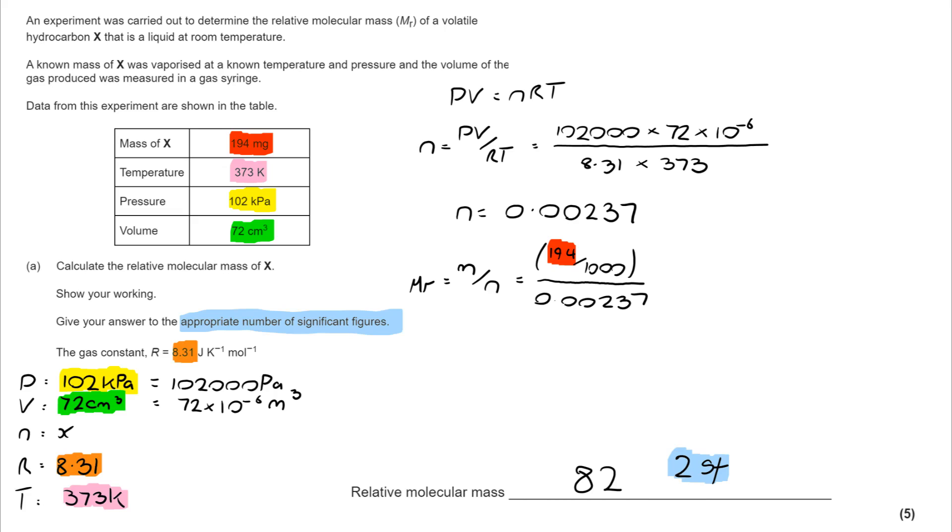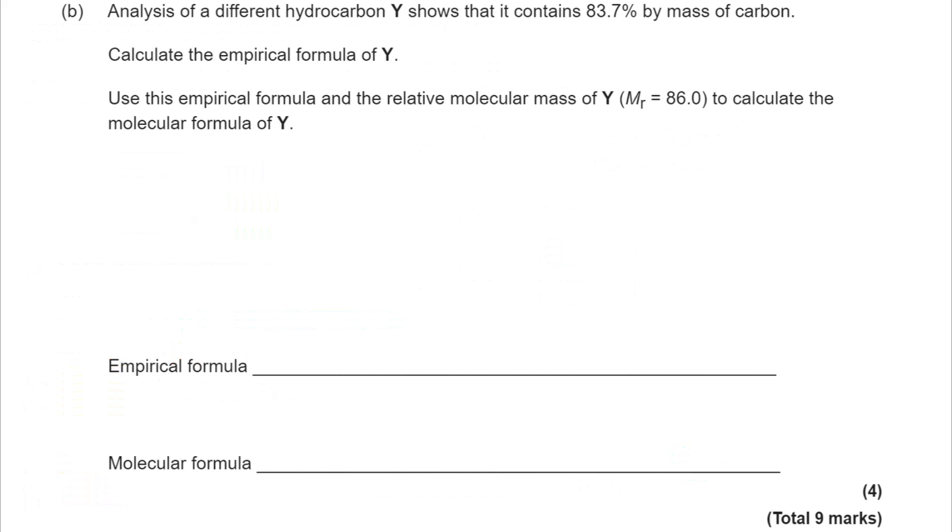You'll notice appropriate number of significant figures is 2. And that's because you can't go to more significant figures than the least significant figures provided in the question. And the volume was only provided to two significant figures. Moving on to part B.